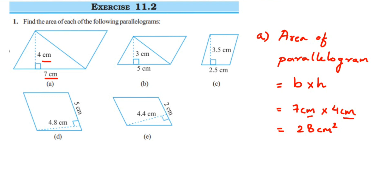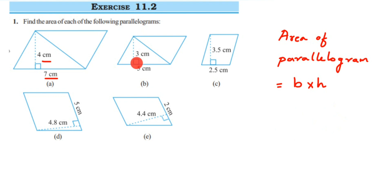For the second one, the height is the dotted line drawn from the vertex to the opposite side of the parallelogram — that's 3 centimeters — and the base is 5 centimeters. Substituting in the formula for problem B: base is 5 centimeters, height is 3 centimeters, so 5 × 3 = 15 centimeter square.